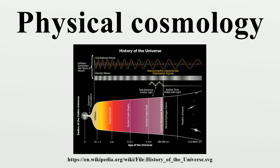The equations of motion governing the universe as a whole are derived from general relativity with a small, positive cosmological constant. The solution is an expanding universe. Due to this expansion, the radiation and matter in the universe cool down and become diluted. At first, the expansion is slowed down by gravitation attracting the radiation and matter in the universe. However, as these become diluted, the cosmological constant becomes more dominant and the expansion of the universe starts to accelerate rather than decelerate. In our universe this happened billions of years ago.